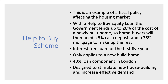Help to Buy is an important government intervention and an example of fiscal policy affecting the housing market. The government offers Help to Buy equity loans — outside London, it will lend up to 20% of the cost of a newly built home. With a 75% mortgage and a 20% government loan, you only need a 5% cash deposit. It's interest-free for the first five years, and crucially it only applies to new-build homes, designed to stimulate new house building and increase effective demand.